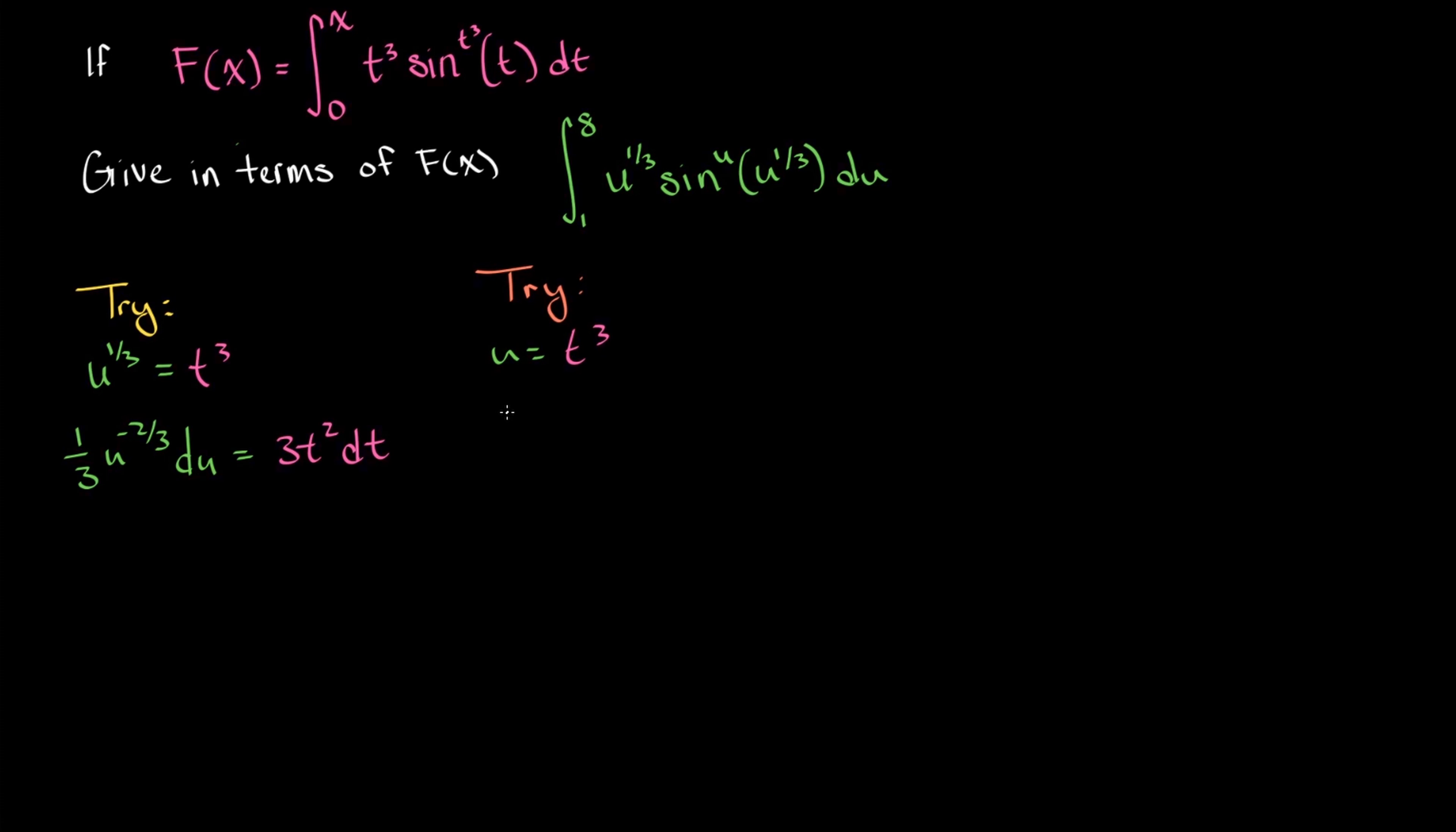Differentiating both sides, we have du now is equal to 3t squared dt. Okay, so this is looking more appealing in what we've already been used to dealing with, so let's try this out.